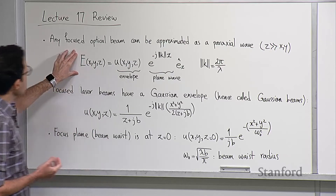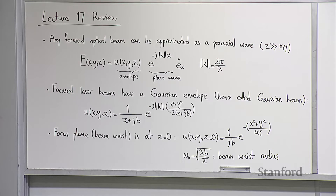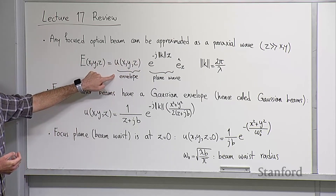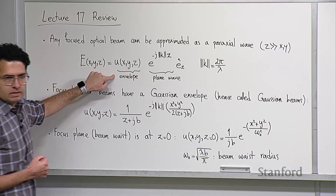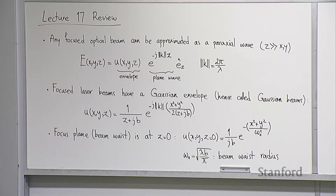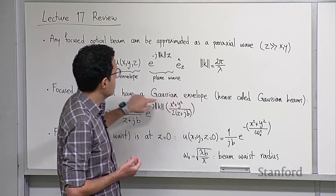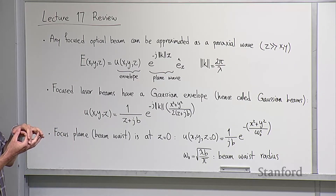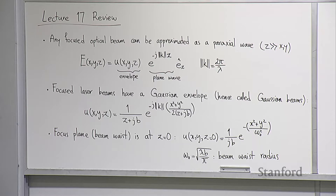Specifically for lasers, this envelope becomes a Gaussian function — a very good approximation. Hence these waves are called Gaussian beams. This should be familiar: if you shine a laser pointer on a flat surface, you see an intensity pattern that is a Gaussian function — bright in the center and gradually tapering off as you radially move away from the optical center.